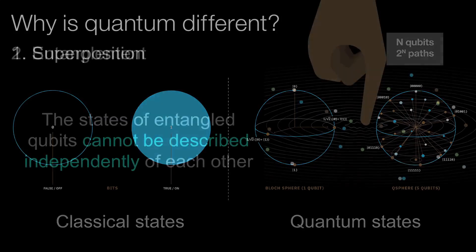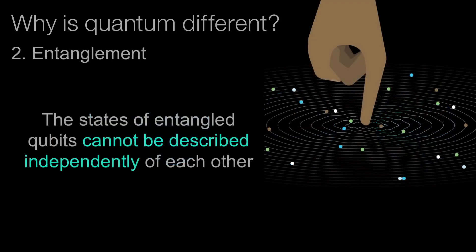The second thing is entanglement. The idea of entanglement is: I've got two qubits and I'm entangling them together. Measuring the first qubit can tell me something about what will happen when I measure the second qubit. Entanglement is the second property that gives quantum information a really unique difference.